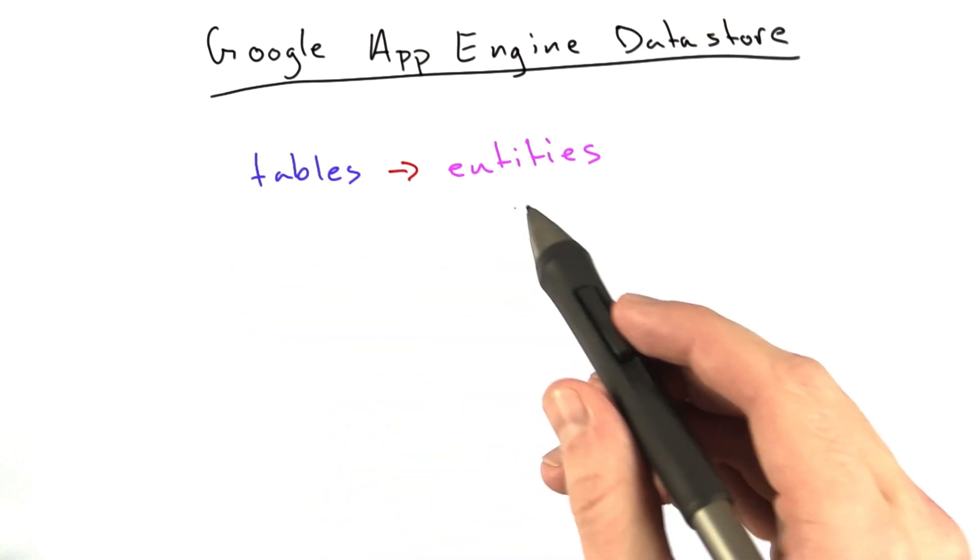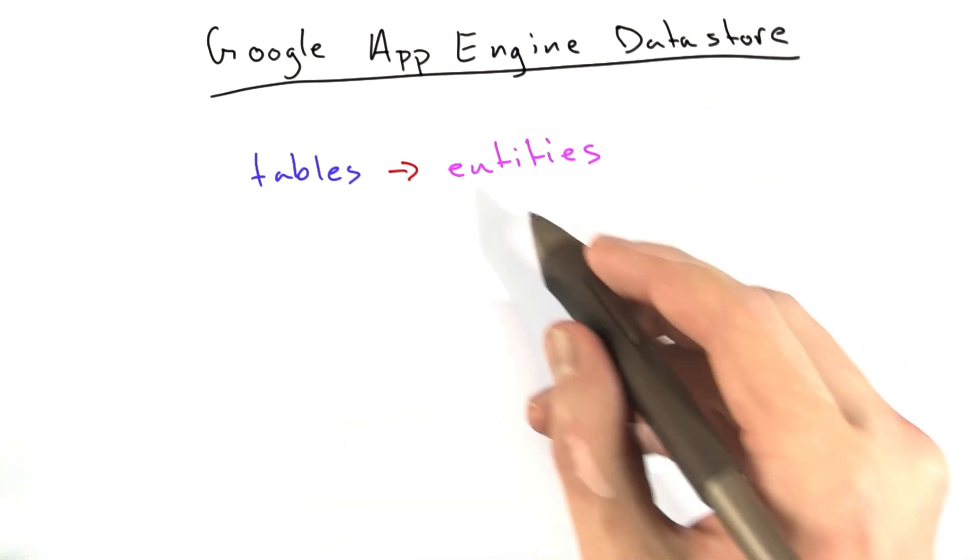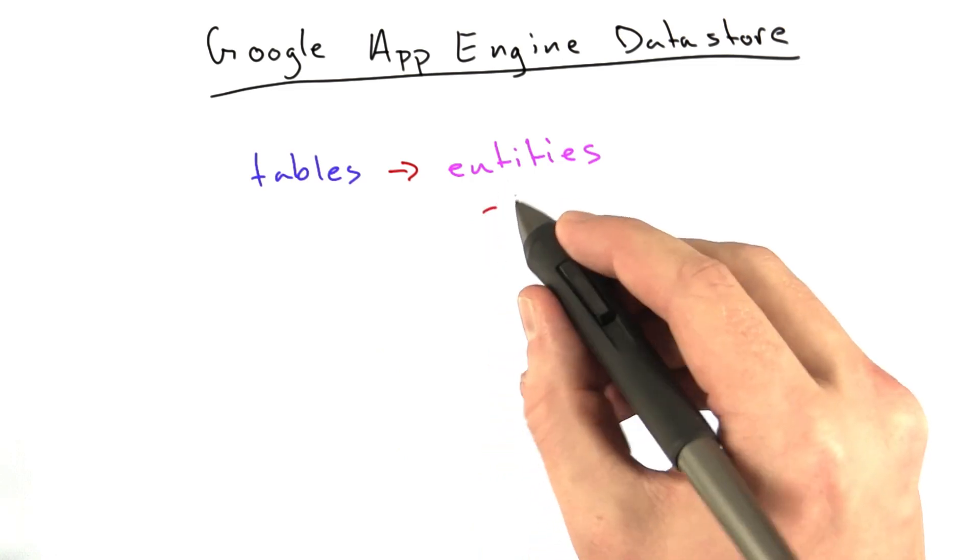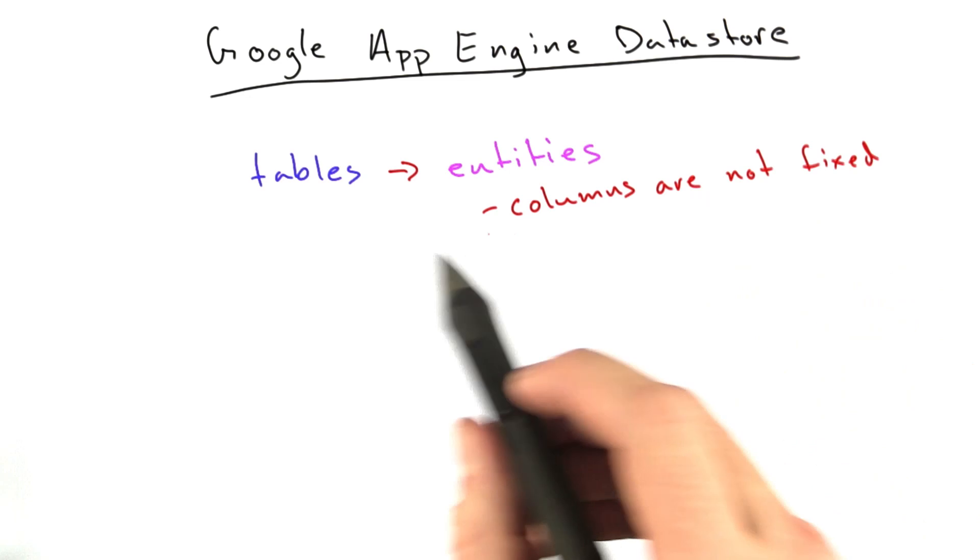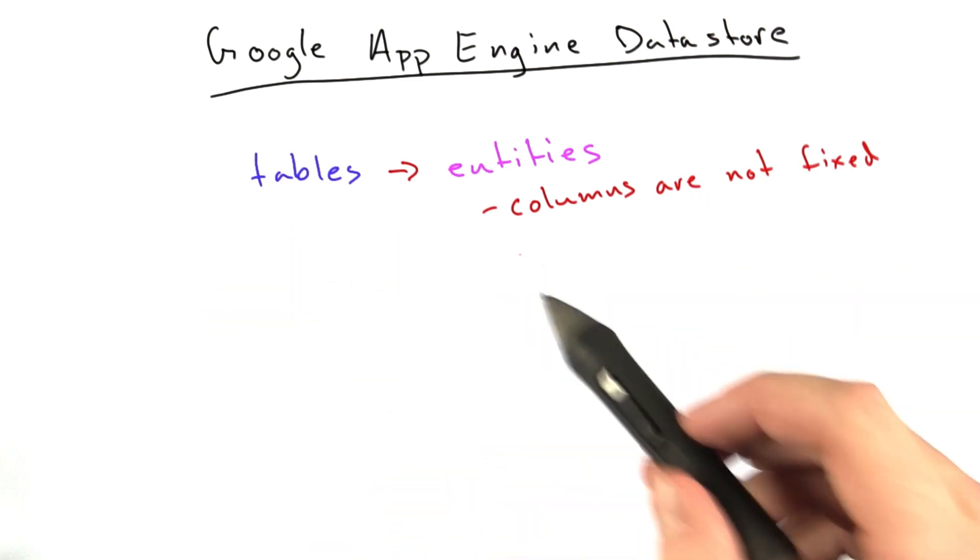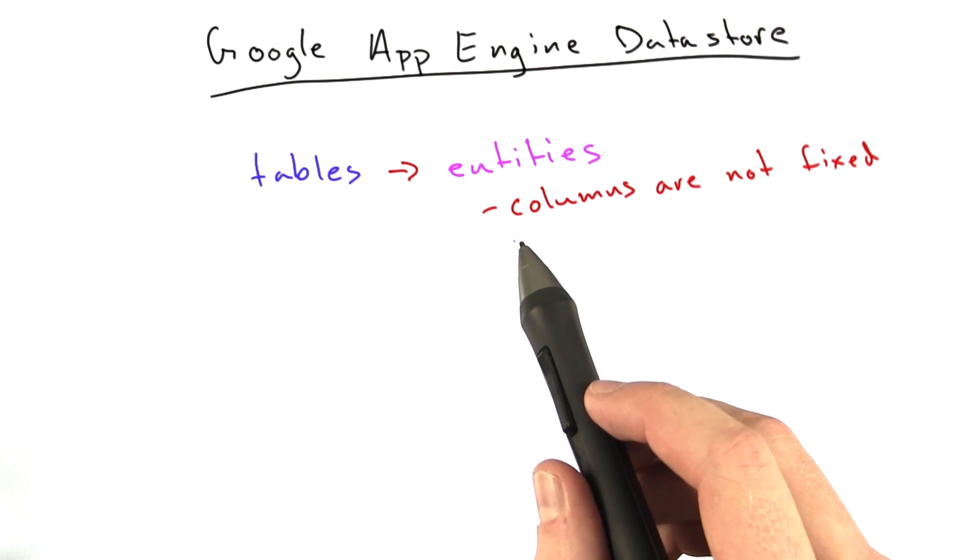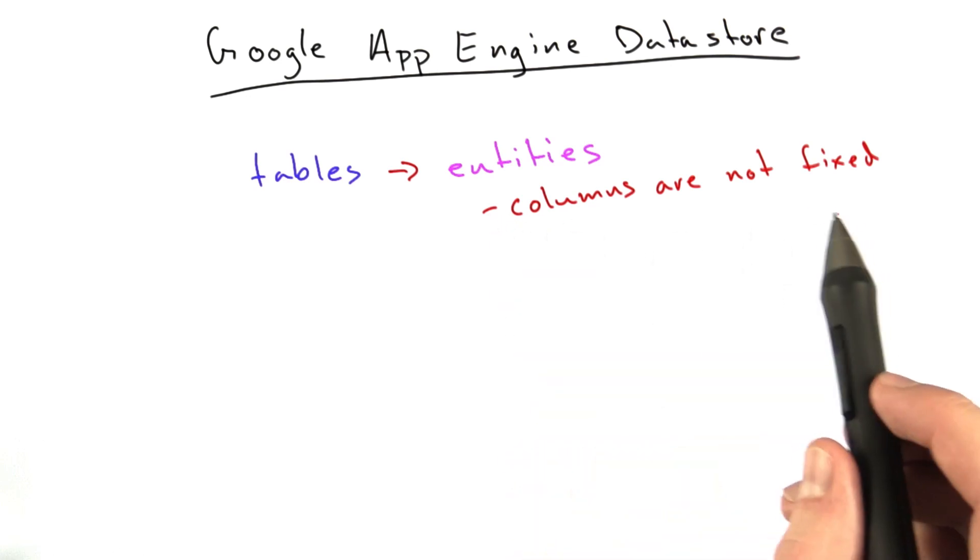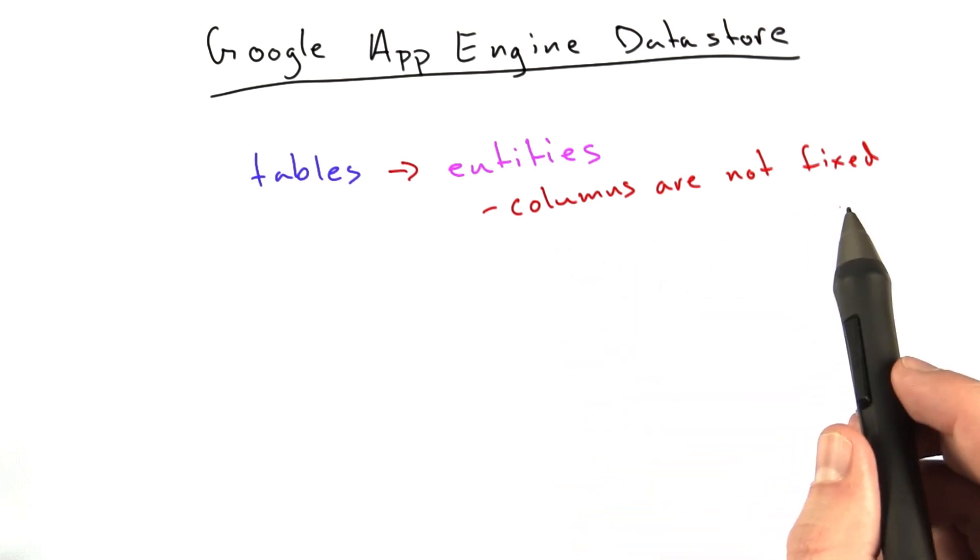Instead of having a table for links, you'd have an entity called link, and then you'd have a bunch of links. A couple things about entities: the columns are not fixed. In a table you had to have a fixed number of columns that you define when you define the table. In a Google App Engine entity, you can have whatever columns you want. Even entities of the same type don't have to have the same columns.